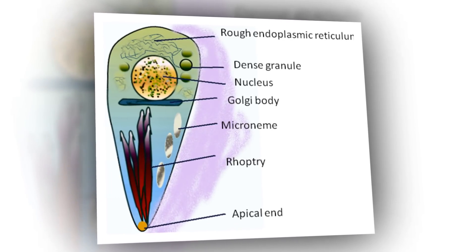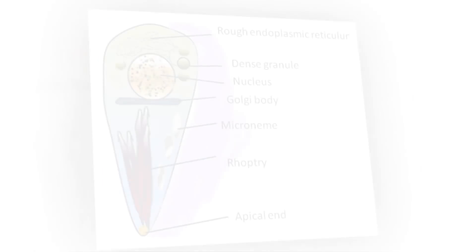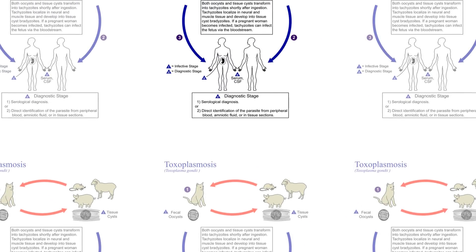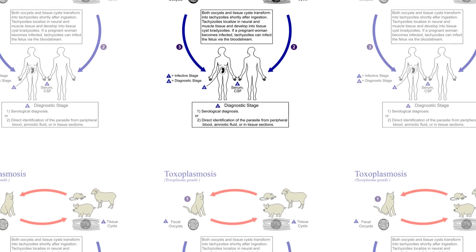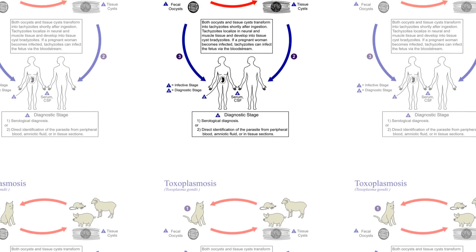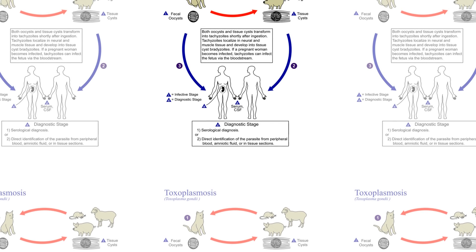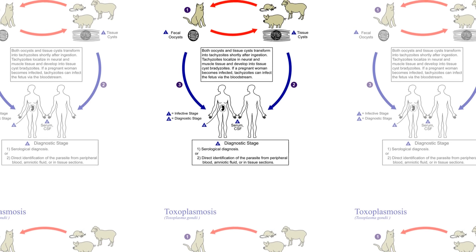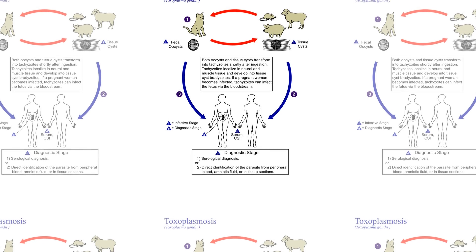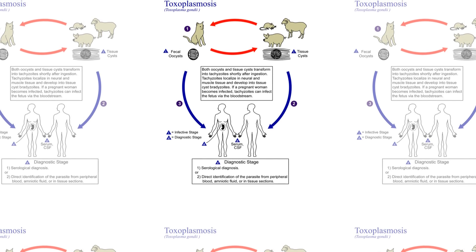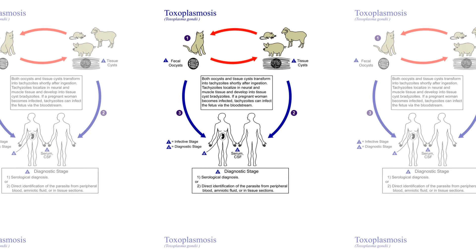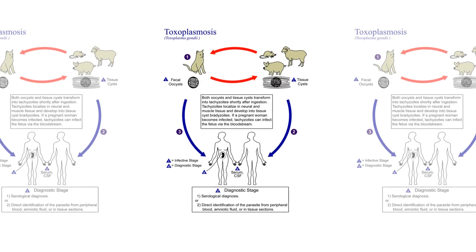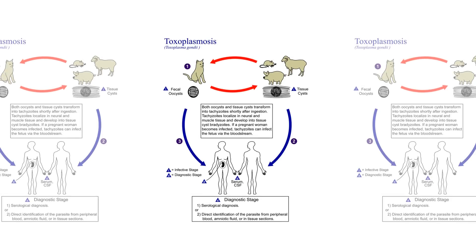The highest prevalence of persons infected is believed to be in France, at 84%. Although mild flu-like symptoms occasionally occur during the first few weeks following exposure, infection with T. gondii produces no readily observable symptoms in healthy human adults. Basic food handling safety practices can prevent or reduce the chances of becoming infected, such as washing fruits and vegetables and avoiding raw or undercooked meat, poultry, and seafood.